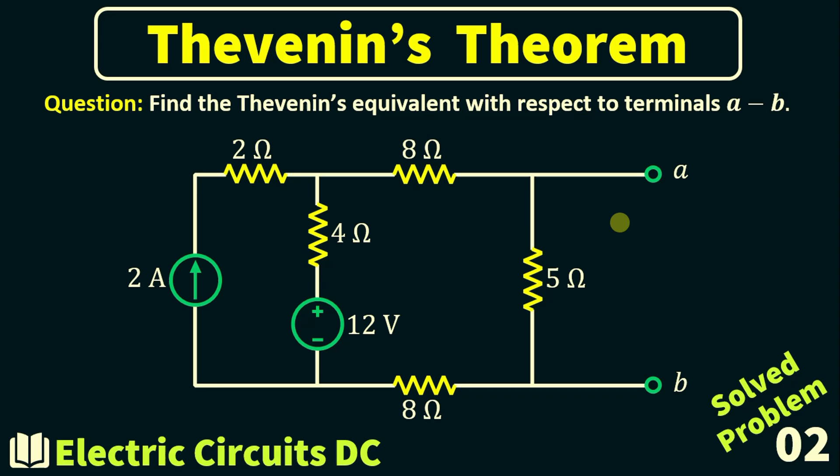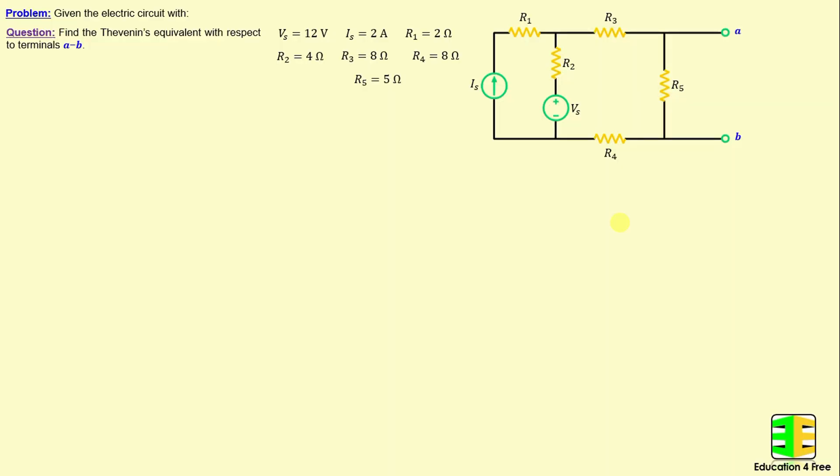Let's dive in and begin with problem number 2. Let's consider this network consisting of 5 resistors labeled R1 through R5, as well as 2 independent sources Vs and Is.